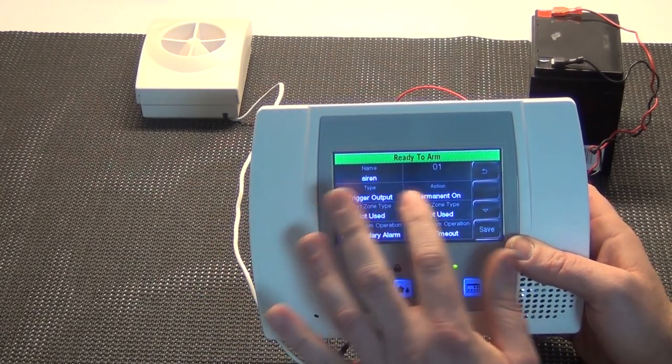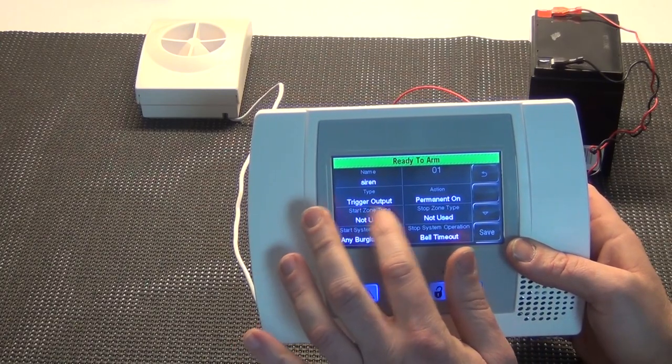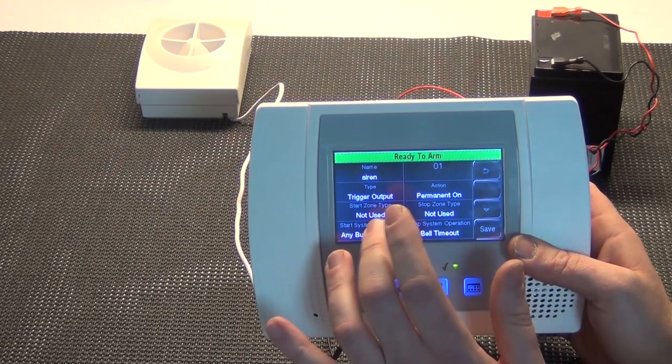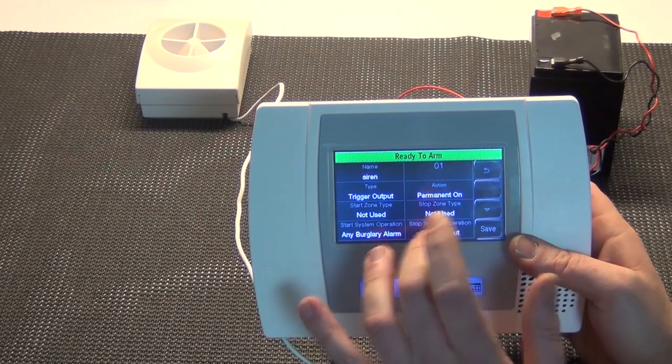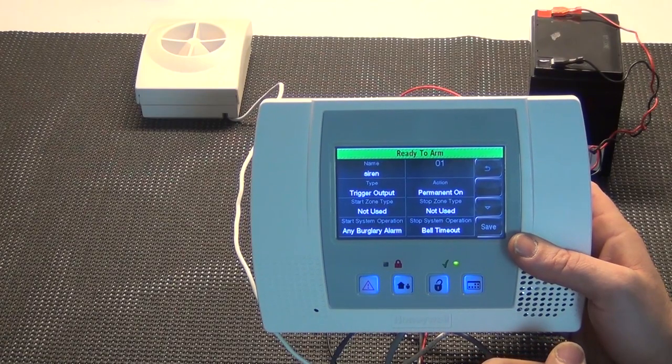The type is trigger output, action permanent on, start zone type not used, stop zone type not used, start system operation any burglar alarm, and then stop system operation at bell timeout. Those instructions are on the diagram as well.